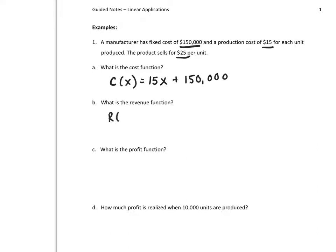Revenue. Revenue is X times P. So my revenue is X, the number of units, times the price of each one, which is 25, 25X.